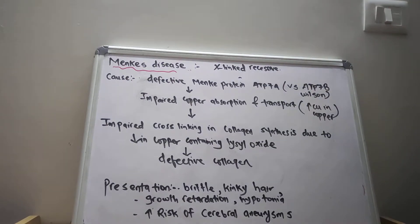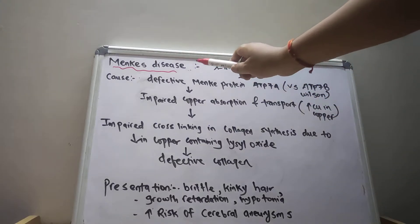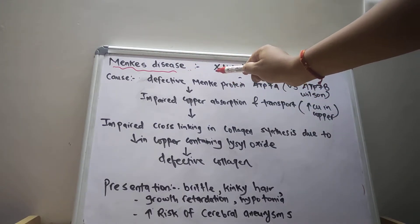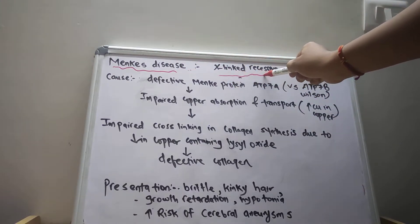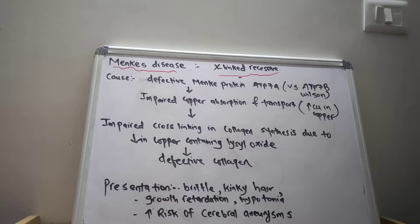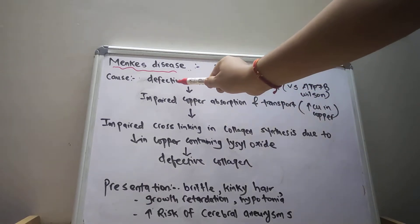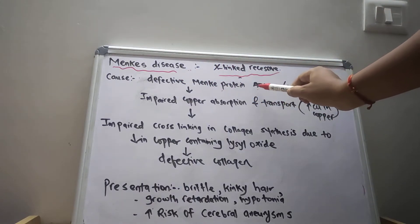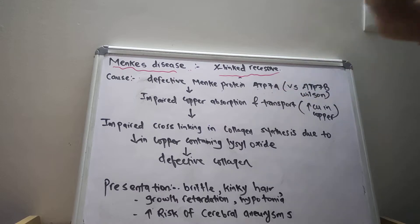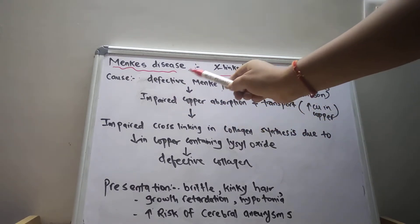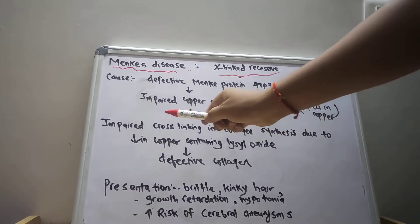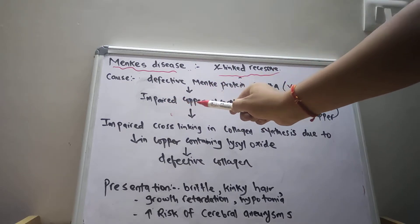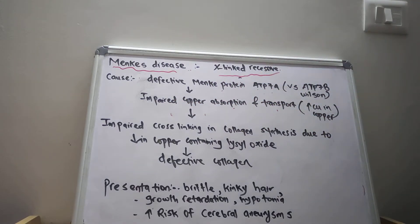The Menkes disease is a connective tissue disorder and an X-linked recessive disorder. The main pathology is a defect in the Menkes protein ATP7A, and due to this defect, there is impairment of copper absorption and transport.